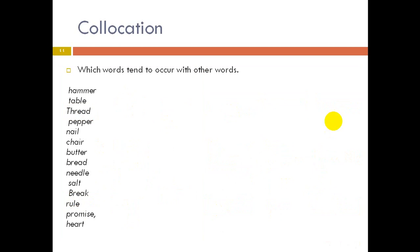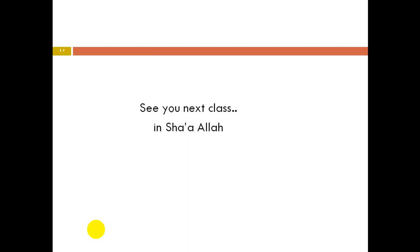Collocation — which words tend to occur with other words: hammer/nail, table/chair, thread/needle, pepper/salt, butter/bread, break/promise, heat/roll. That brings us to the end of our class. Thank you very much for joining me, and until we meet again in the next class, all the best. Bye-bye.